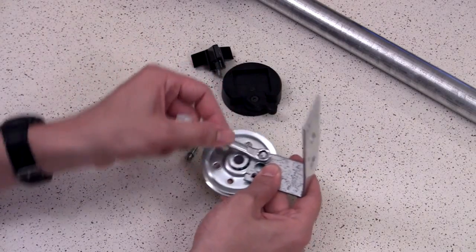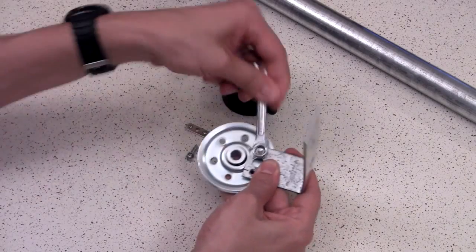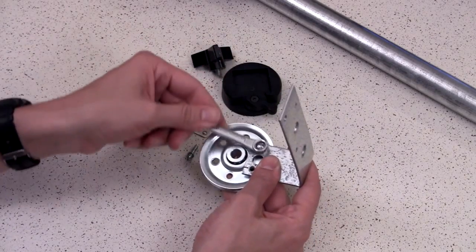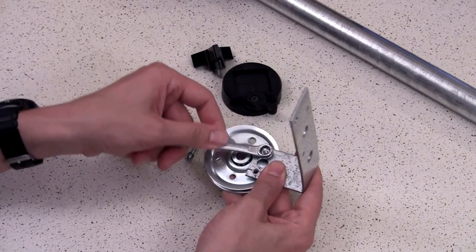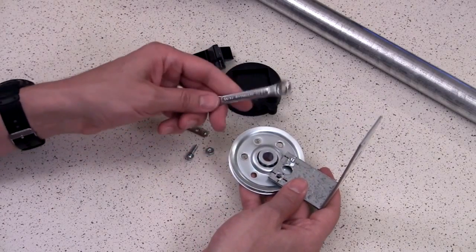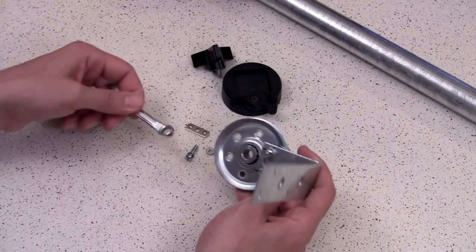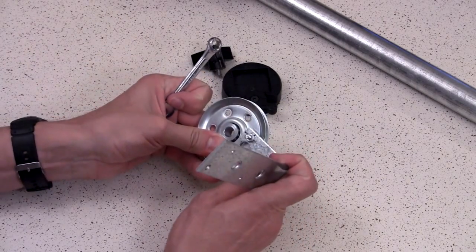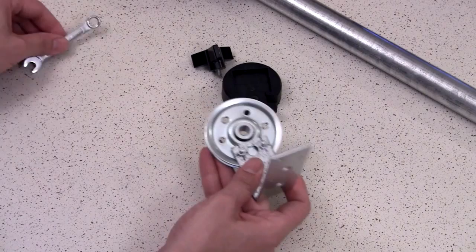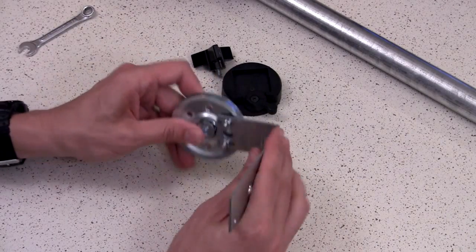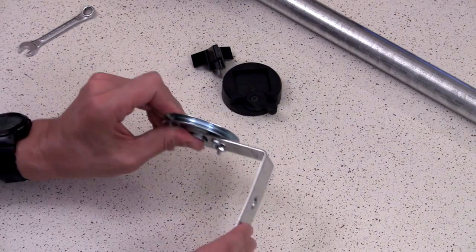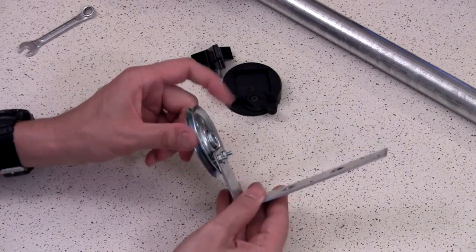The screws are eleven thirty-seconds inch screws. The only reason I know that is because the wrench that I'm using is eleven thirty-seconds, so that must be what the screws are. As you can see, that platform is not going to move, which is what I wanted.